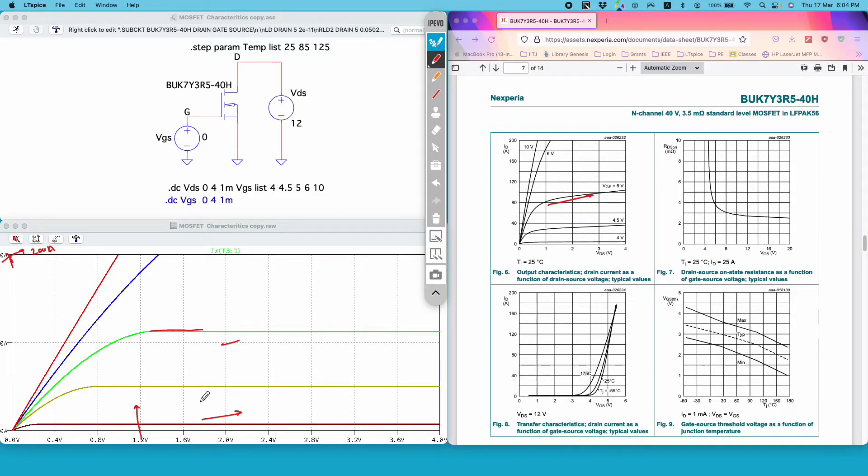However in the data sheet this is not entirely flat, it's in fact increasing with a very gradual slope but it's not flat like the plot in LTspice. And this is due to the reason that the model provided by NXP is not very thorough, it's a very basic model so it does not capture the true behavior of the physical MOSFET. But nonetheless if you have a model which is very detailed you can have a point by point match with the data sheet plot.